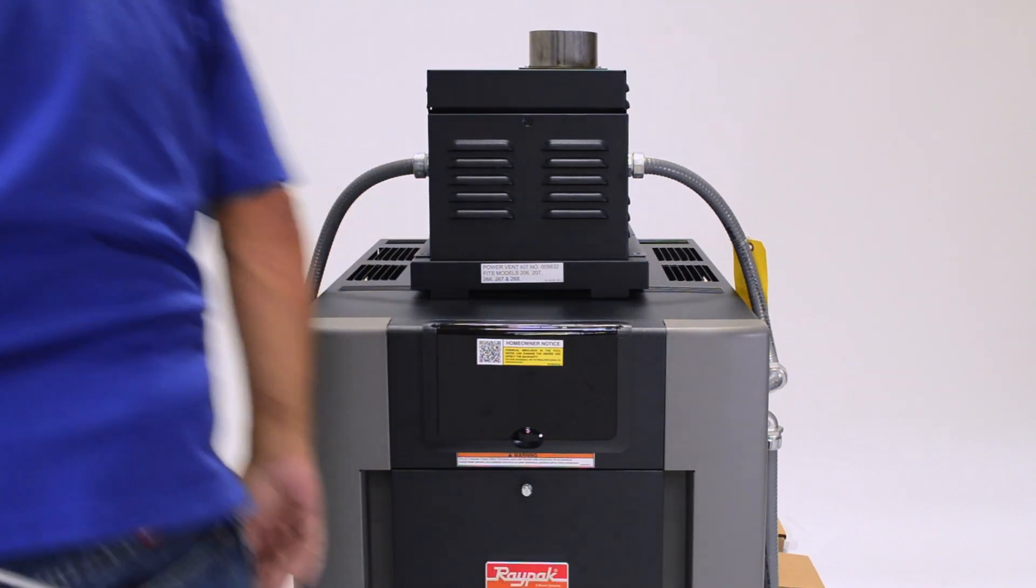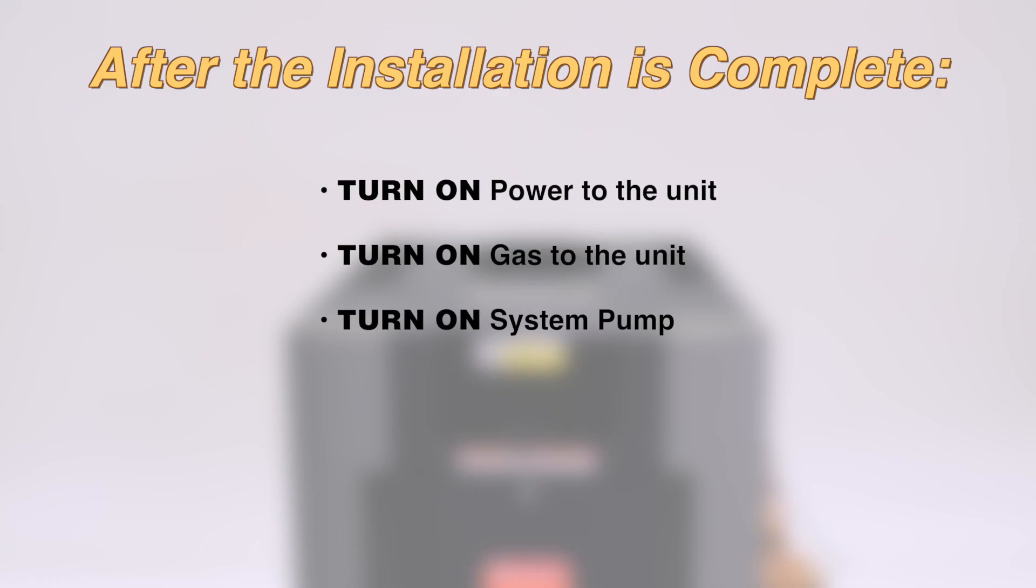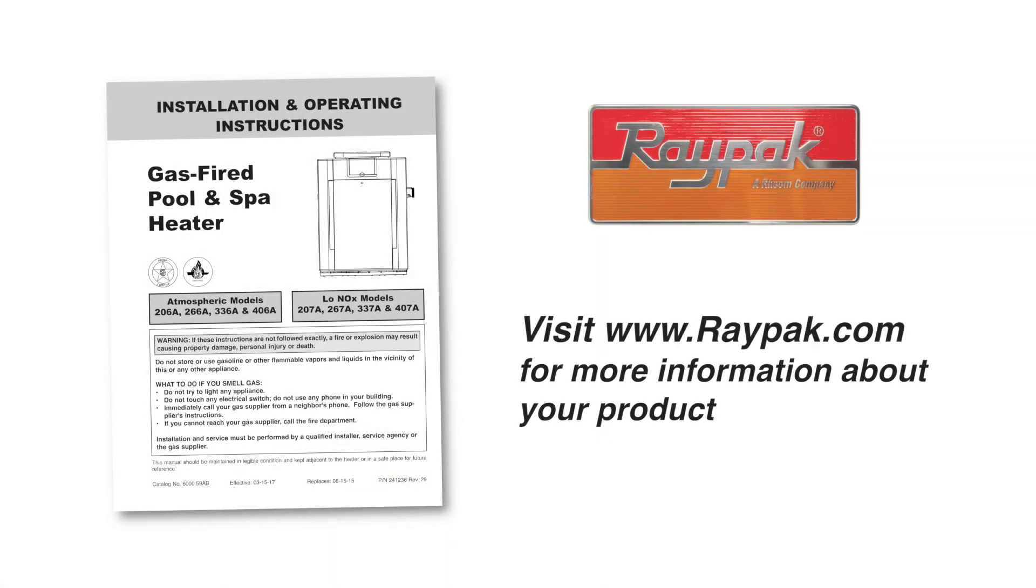Reinstall the front door assembly. Turn the power, gas, and system pump on. For more information about this product, visit us at raypak.com. Please subscribe to the Raypak channel on YouTube for additional how-to videos.